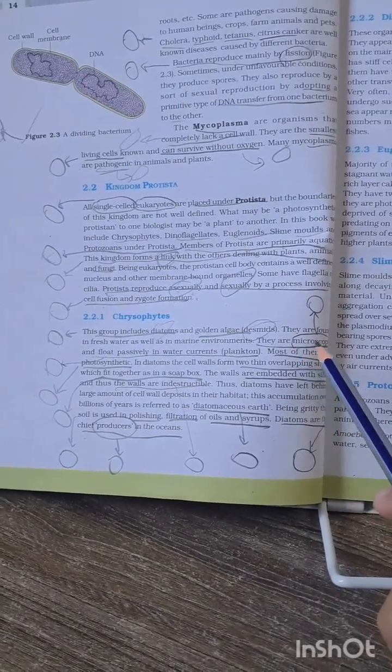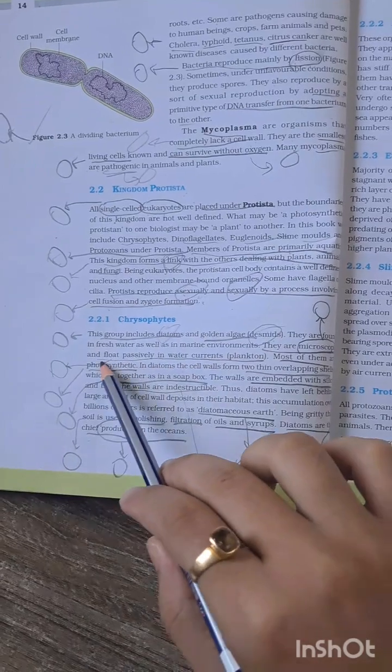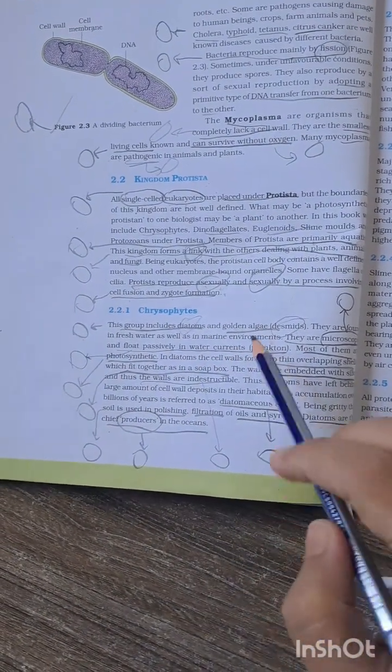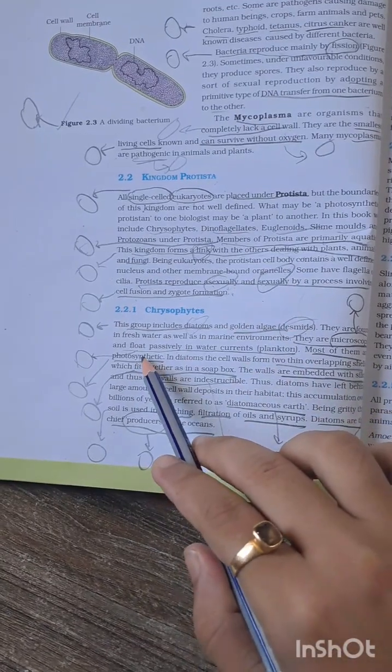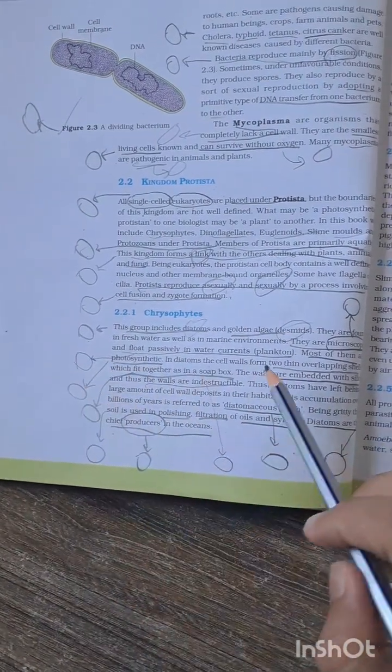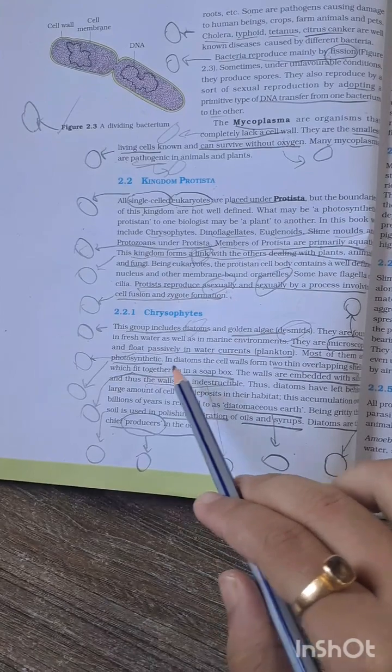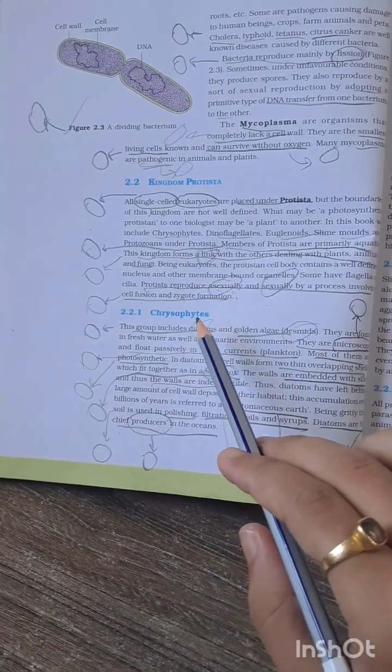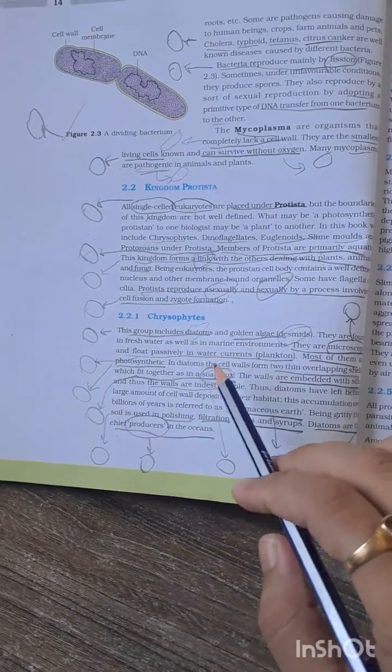Another very important MCQ - they are microscopic and float passively in water currents. This question has been asked many times. Most Chrysophytes are photosynthetic. In them, overlapping cells fit together as a soap box. This question has been asked many times - the soap box appearance is seen in which organism, that is Chrysophytes.